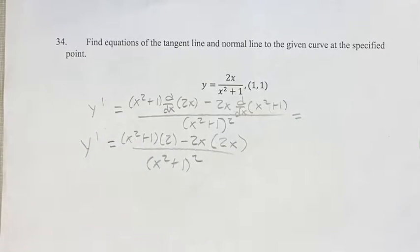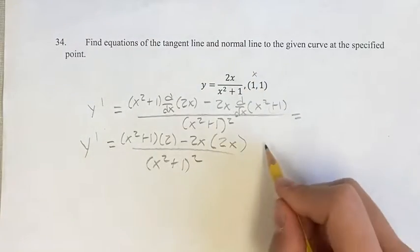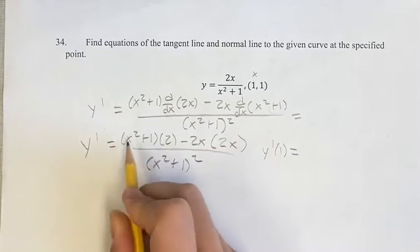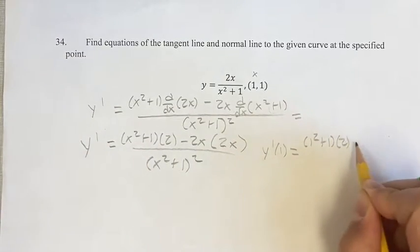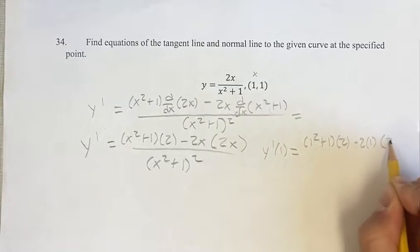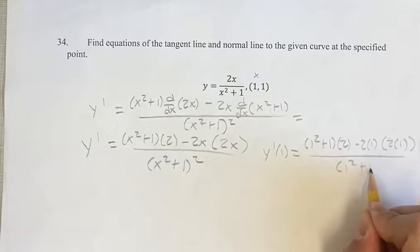If you're actually solving for the derivative, you'd want to simplify this and combine like terms, but we're just looking for it when x equals 1. So y prime of 1, plugging in 1 wherever we see x, we get 1 squared plus 1 times 2, minus 2 times 1 times 2 times 1, over 1 squared plus 1 squared.